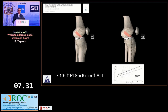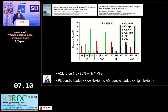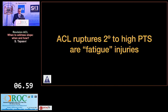About three decades ago Henri Dujour described that if you have a posterior tibial slope which increases by 10 degrees, then you have a 6 mm increase in anterior tibial translation. Further studies demonstrated that with increase in tibial slope you have an increase in ACL forces by almost 75%, with PL fibers more loaded at low flexion angles and AM fibers more loaded at high flexion as we go into higher tibial slopes.